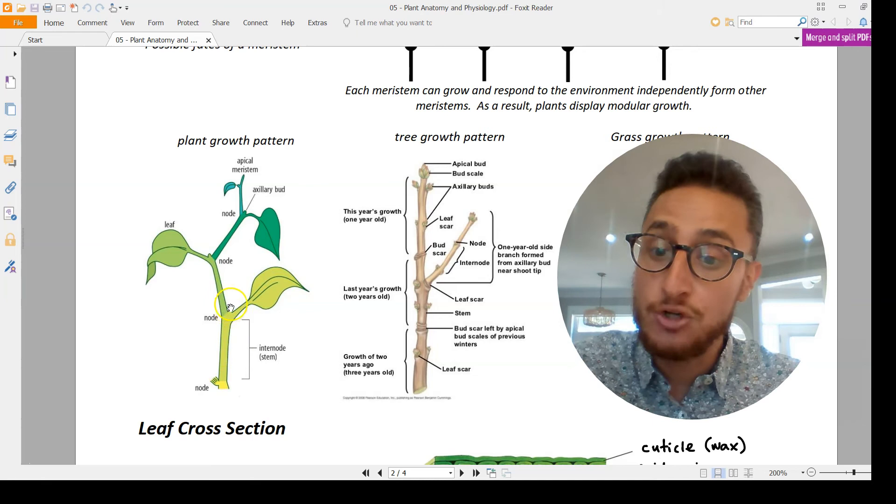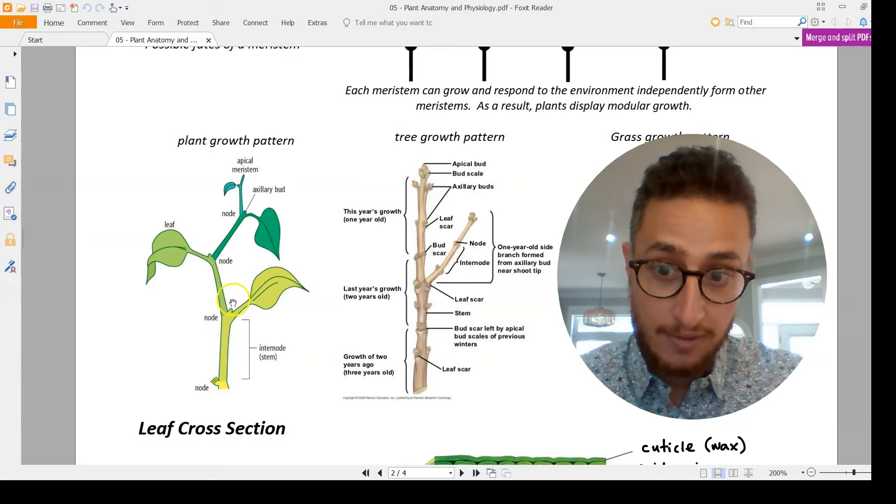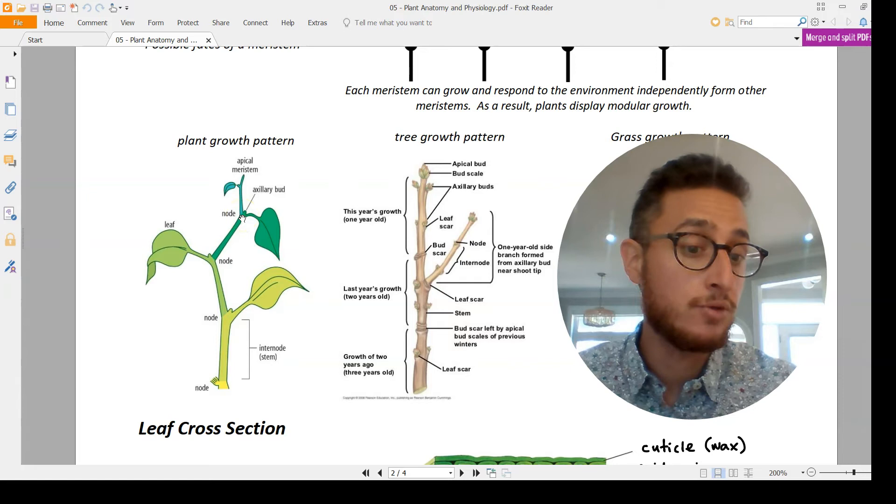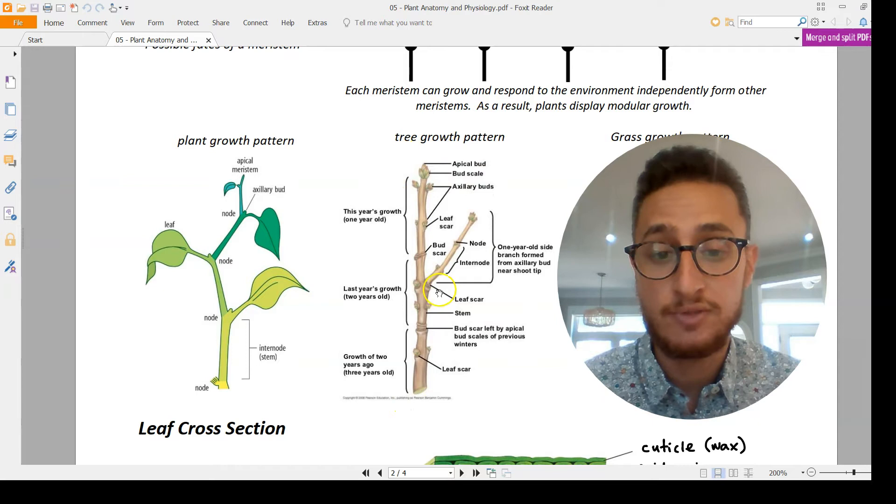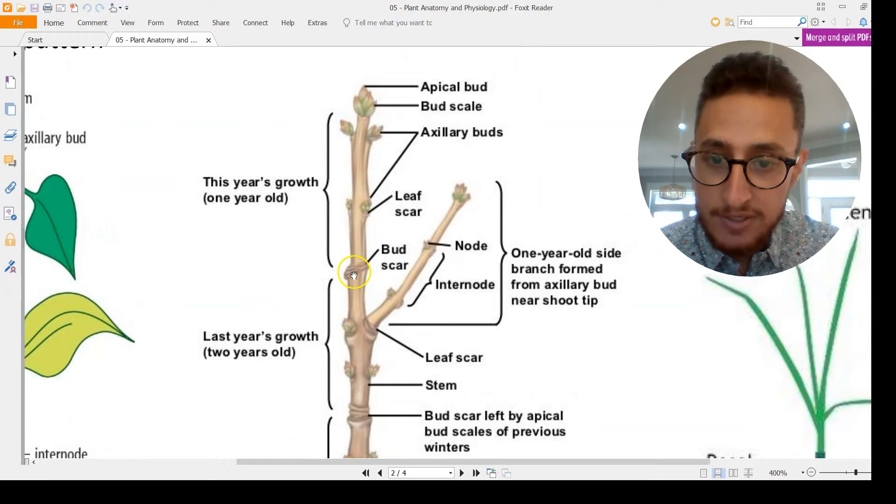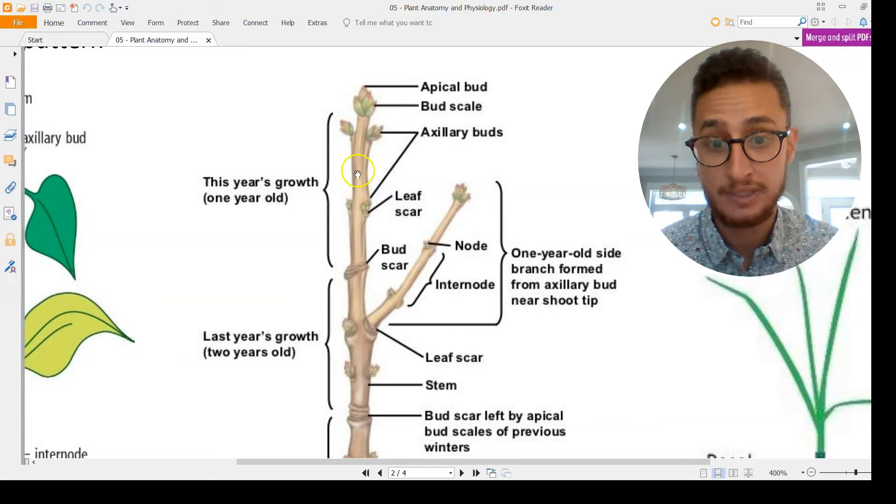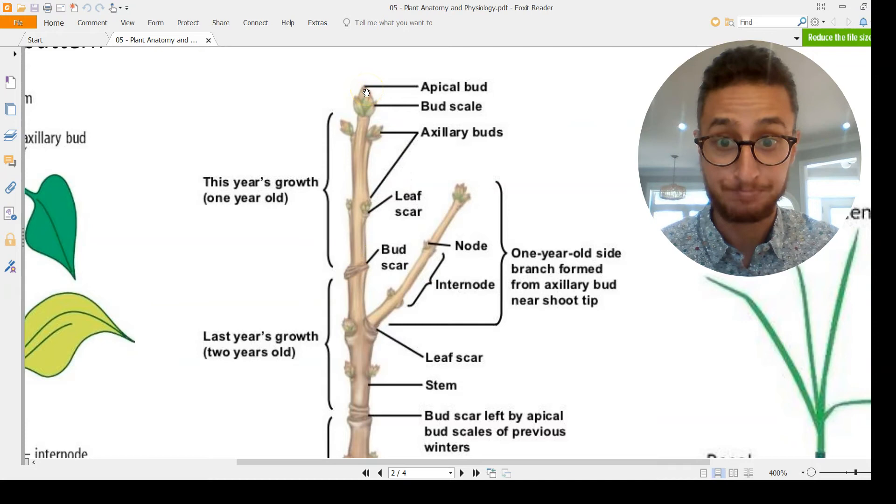We call this modular growth. Plants grow in these discrete little sections from each meristem. Here's kind of the lay of the land for a basic plant. You'll have these nodes, and each node is basically where you find a meristem. In between those nodes, we call it the internode stem or internode space. Let's have a look at the branch of a tree. This little guy here is called a bud scar, and essentially that is a line left from where the axillary meristem started out last winter.